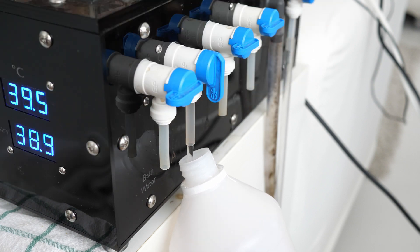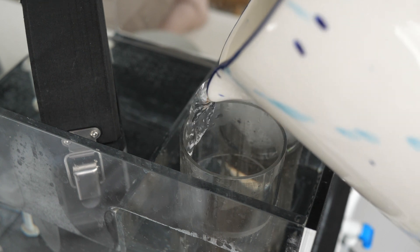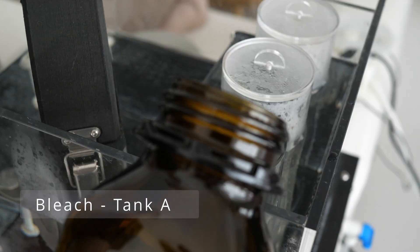While the machine starts the development step, we now drain the pre-bath from tank A. Then, we give the tank a small rinse with fresh water. After that, we can add the next bath, which is the bleach in this case.